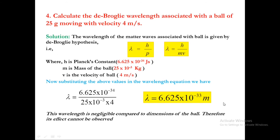Look at this value — this wavelength is negligible compared to the dimensions of the ball. The ball is 25 grams moving at 4 meters per second, yet we end up with a number nearly equal to Planck's length, 10 power minus 33. That means it is very, very negligible. Therefore, the matter wave associated with the ball and its effect cannot be observed in the real sense.